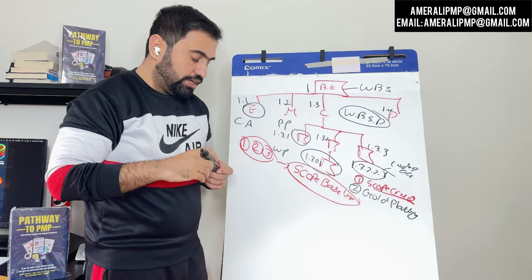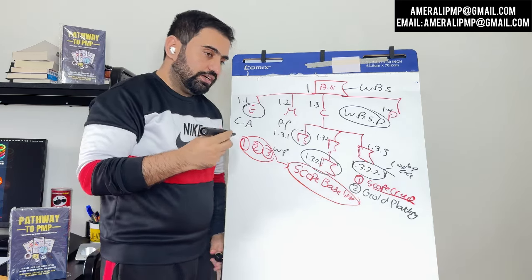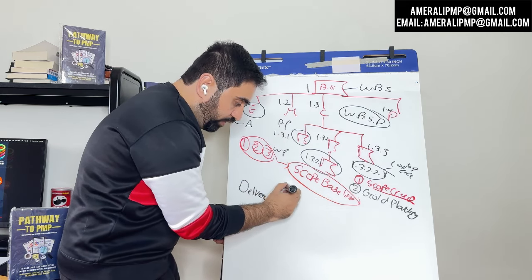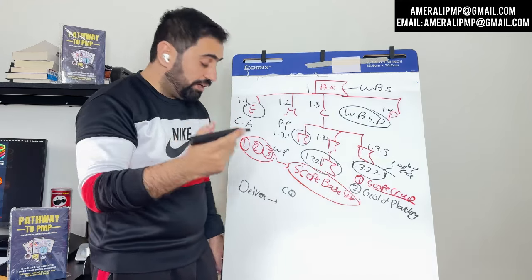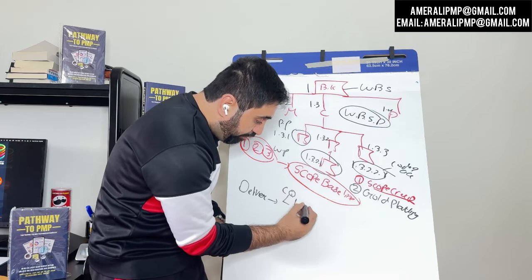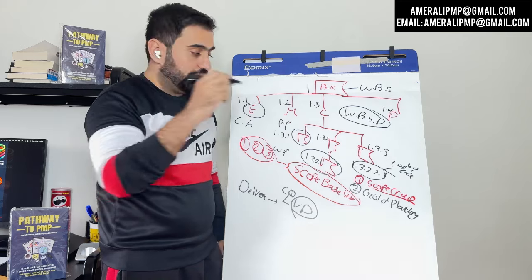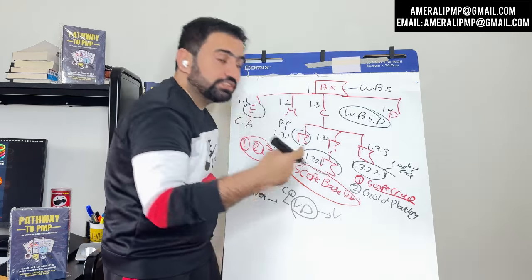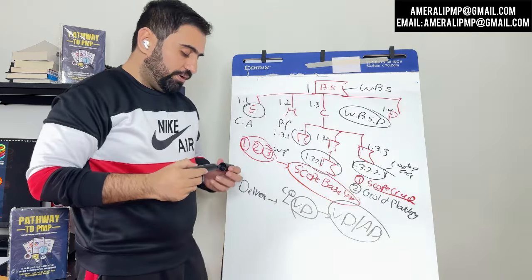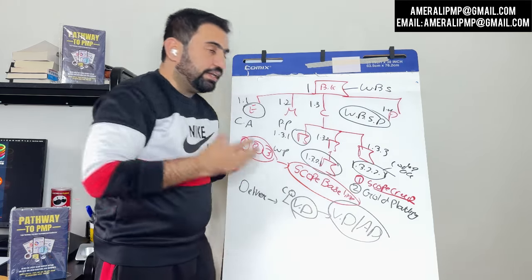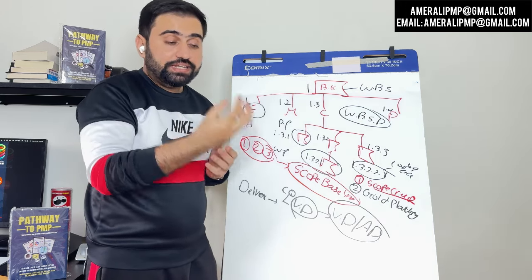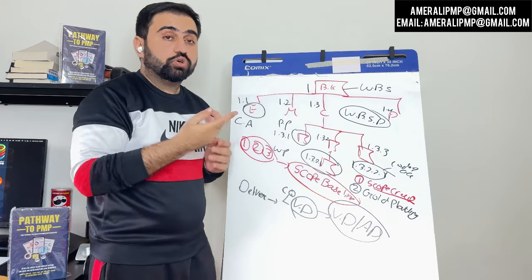As we discussed in quality, when deliverables are made they first go to control quality and are checked according to the quality management plan. If approved by the quality team, they become verified deliverables. Then in the validate scope process, the client checks whether the deliverable is according to the scope baseline — if yes, you get a validated deliverable, also called an accepted deliverable. Remember: the client checks against the scope baseline, and the internal team checks against the quality plan.